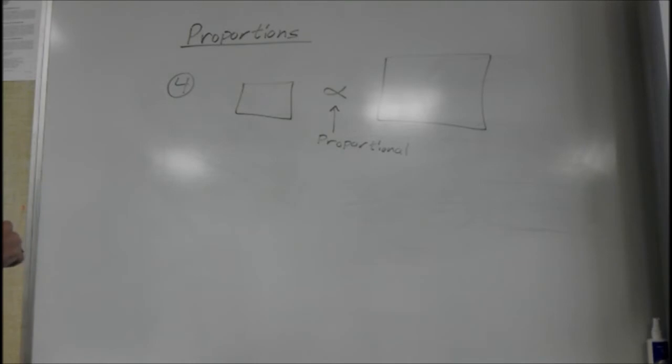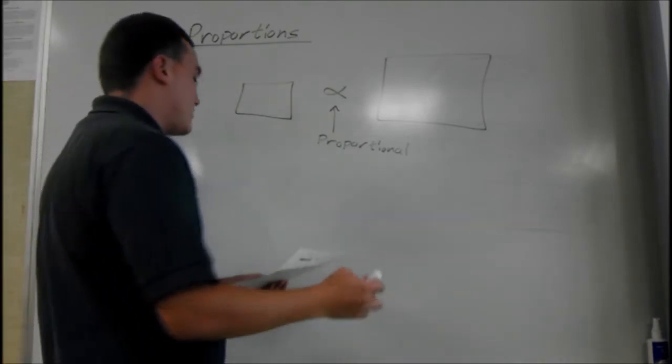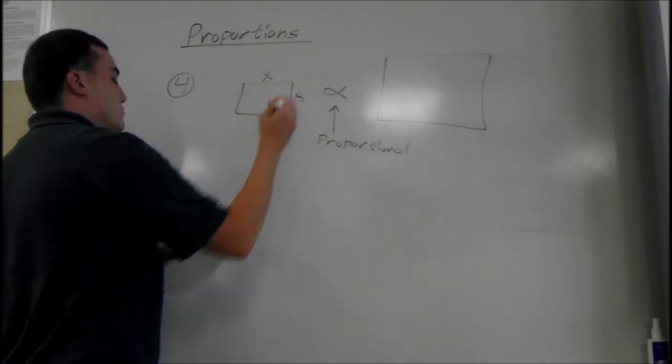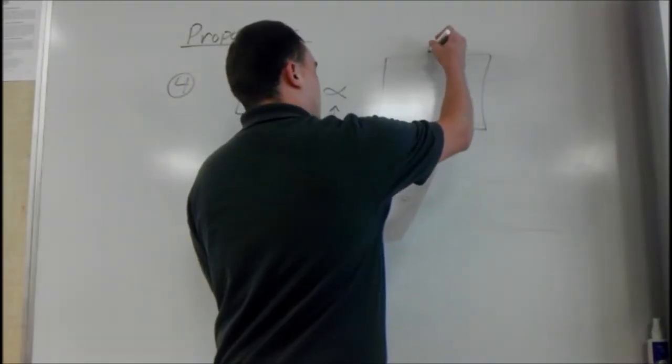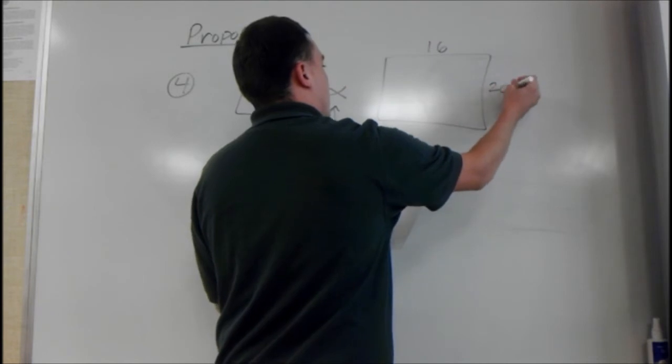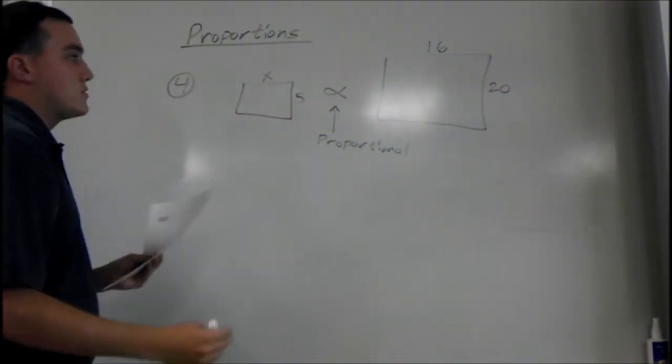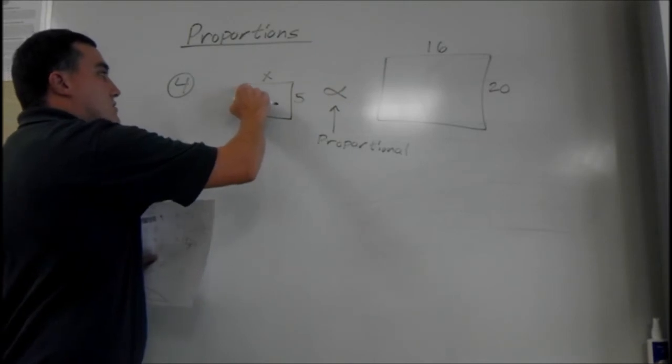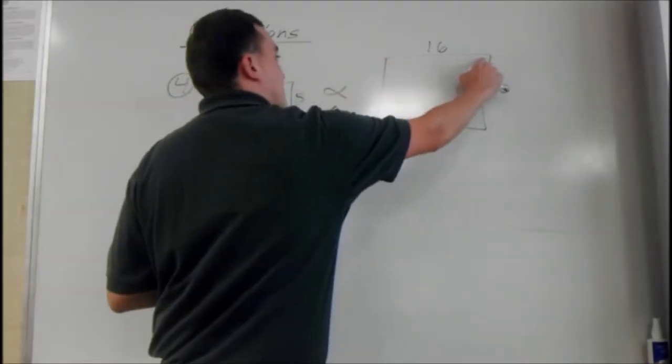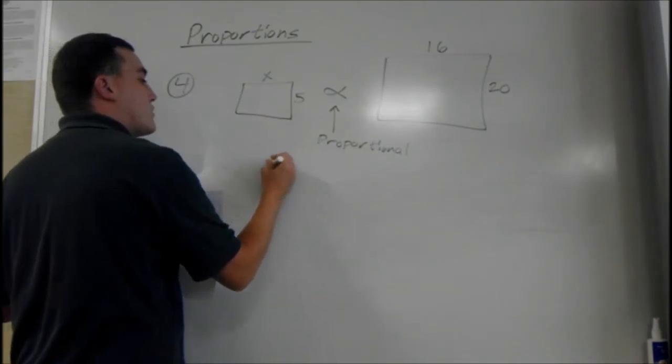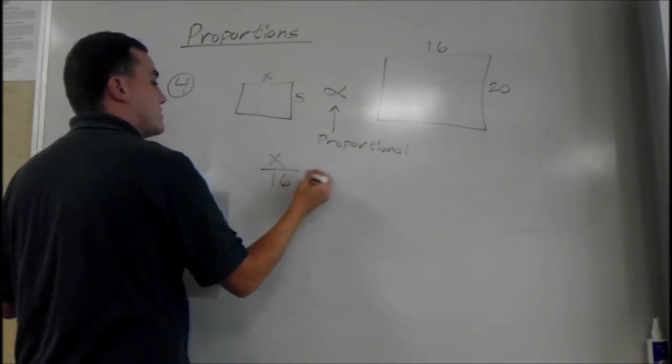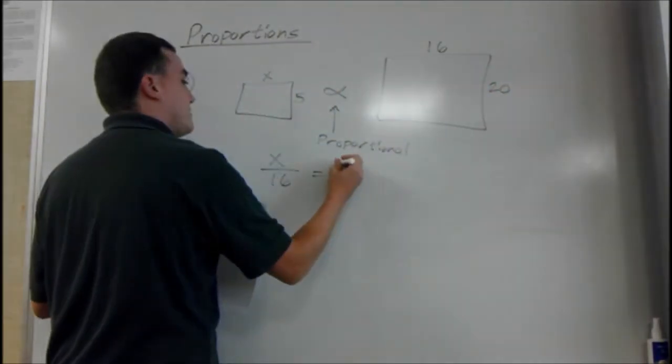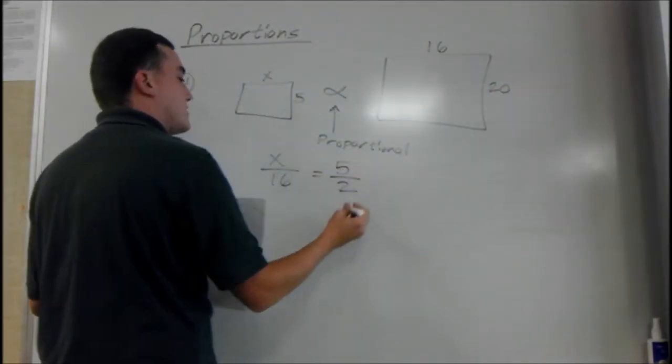Say we have, this is number 4, a smaller box and then a larger box. But they're proportional and that's what this means. It's actually called alpha. It means they're proportional. And then, usually in these problems, they're going to give us some numbers with the boxes. So say we have x and 5 on this one and 16 and 20 on this one. To set up the proportion, you just use the same side. So this first side is going to be x over 16. You can write this in different ways. This isn't the only way to do it. And then this would be 5 over 20.